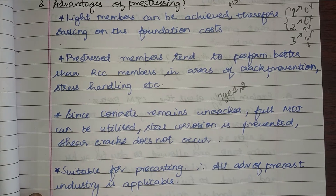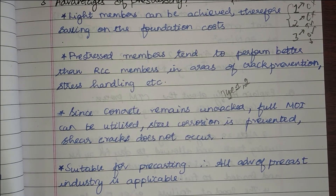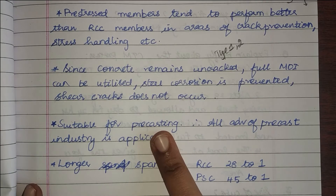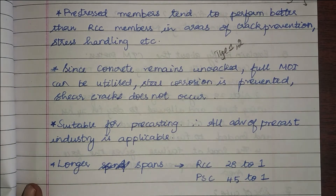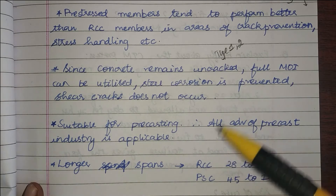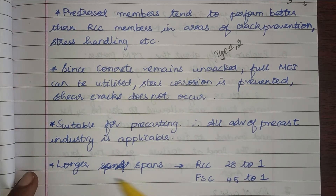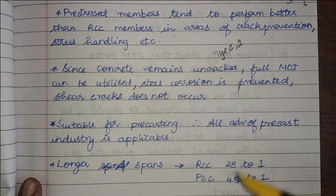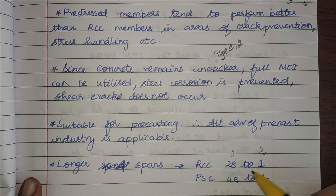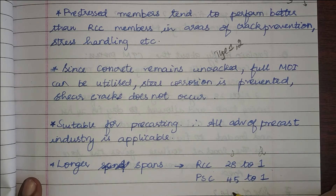Another advantage is that pre-stressed concrete is suitable for pre-casting, so all advantages of pre-casting also apply. Additionally, longer spans are achievable: in RCC the span-to-depth ratio is 28:1, whereas in pre-stressed concrete it is 45:1, making it clearly suitable for longer spans.